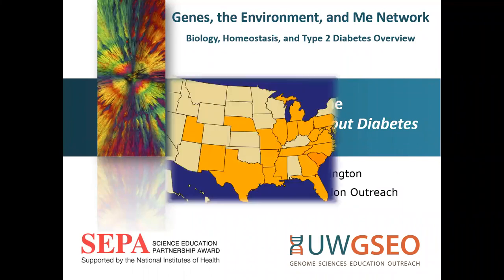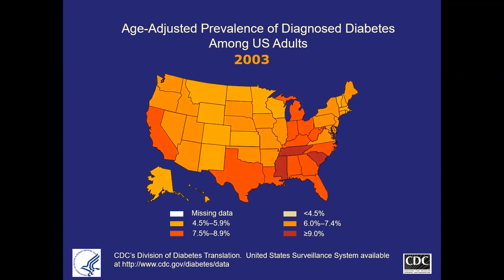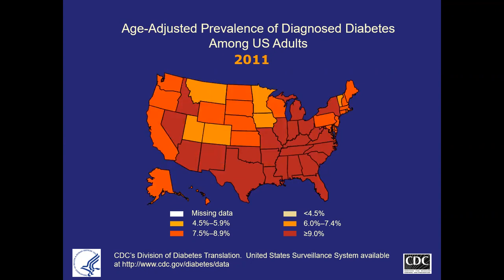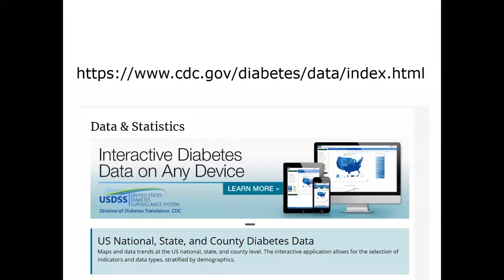In lesson one of the biology homeostasis and type 2 diabetes curriculum, students are shown the anchoring phenomenon for the unit, which is a slide set from the CDC that you're watching here. In watching the states become more and more impacted by diabetes over a relatively short period of time, students are prompted to ask many different questions as to why and how this is happening: What is diabetes? Is this trend due to changes in our genes or our environment? How are individual choices and social factors interconnected?